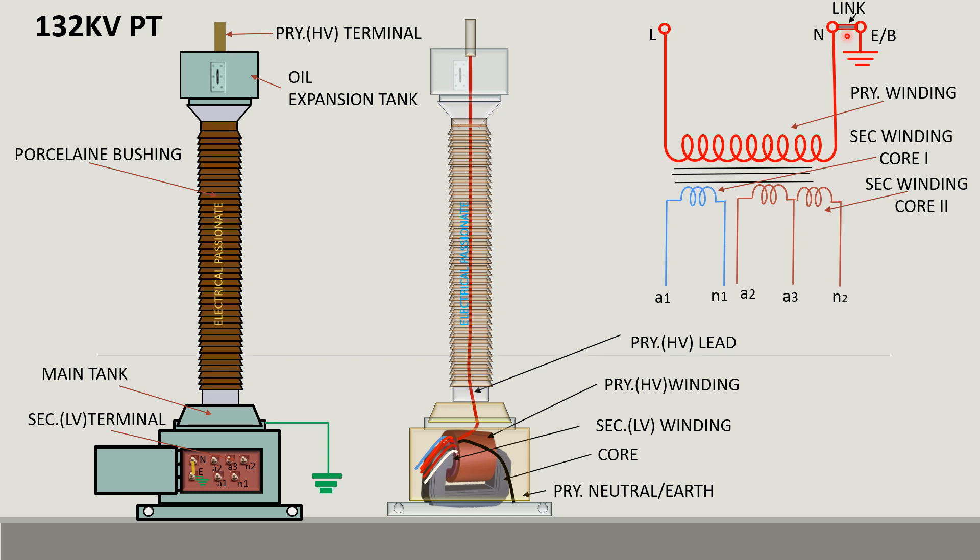While meggering insulation resistance it should be remembered that the said link must be removed. The secondary terminals are drawn outside by suitable insulated bushing. The whole assembly winding and core are dipped into transformer oil, the insulated oil.